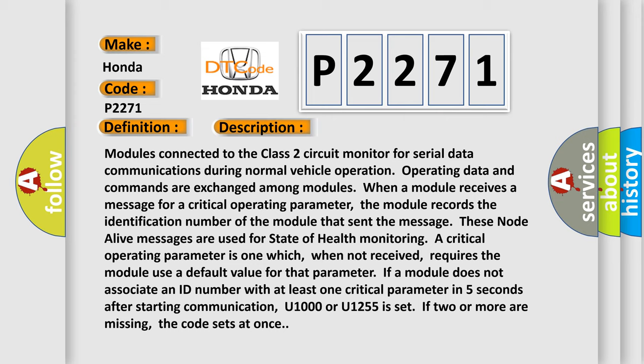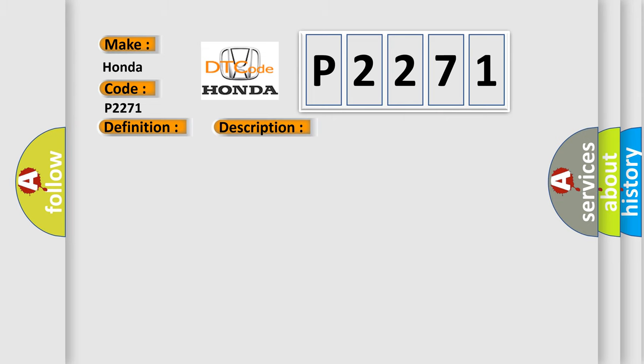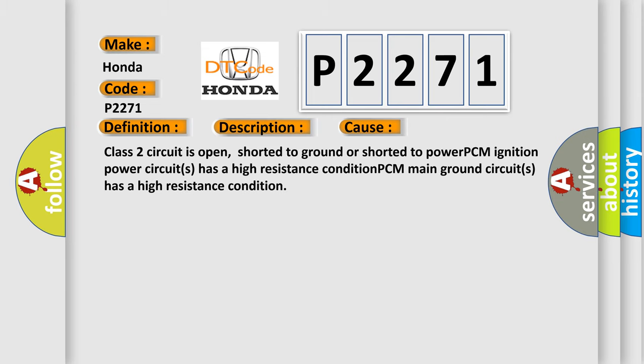This diagnostic error occurs most often in these cases: Class 2 circuit is open, shorted to ground, or shorted to power. PCM ignition power circuits has a high resistance condition. PCM main ground circuits has a high resistance condition.